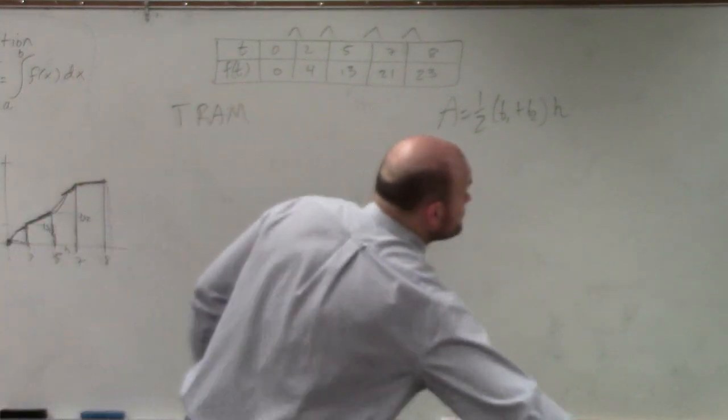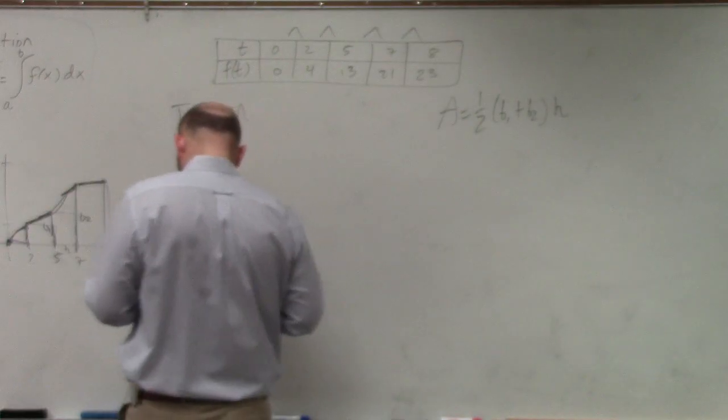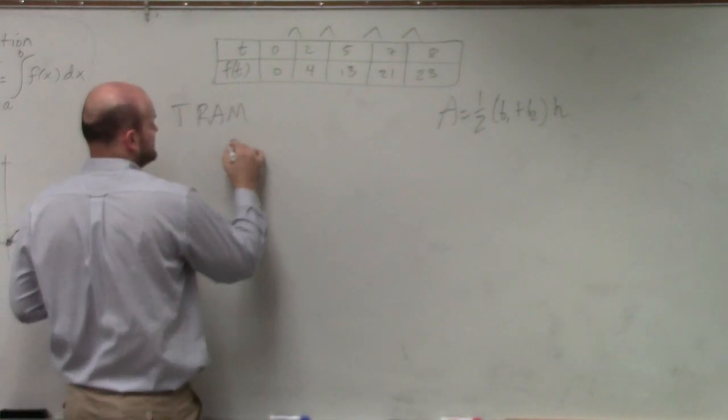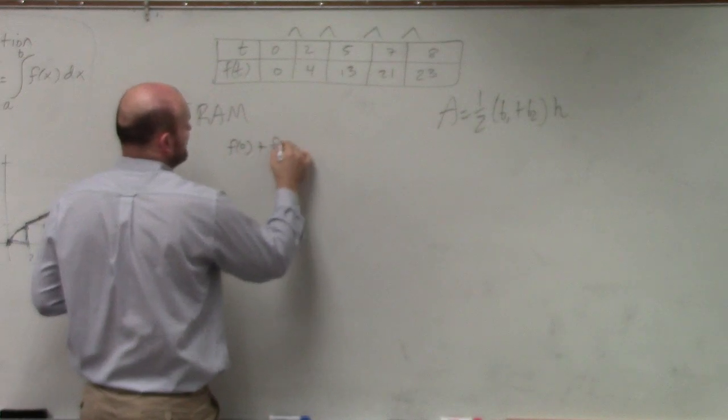In finding the trapezoidal rule, we're going to start with these first two. So I'm going to say f of 0 plus f of 2.